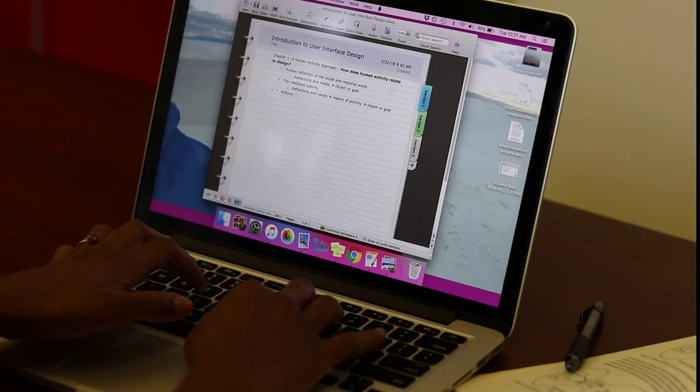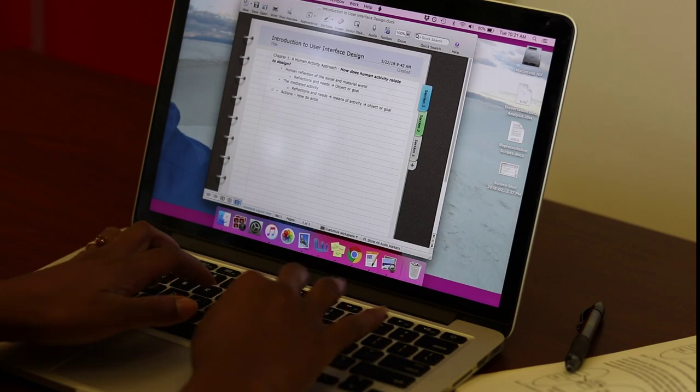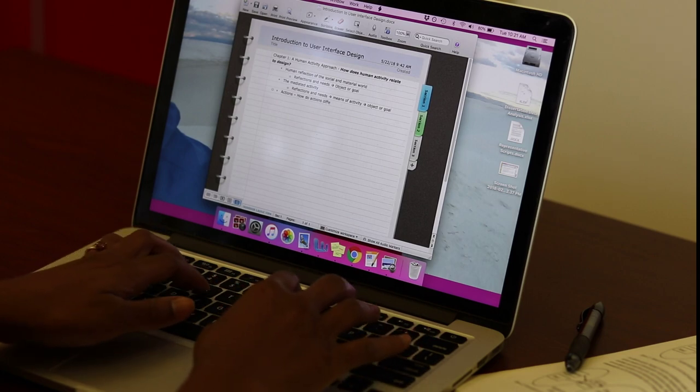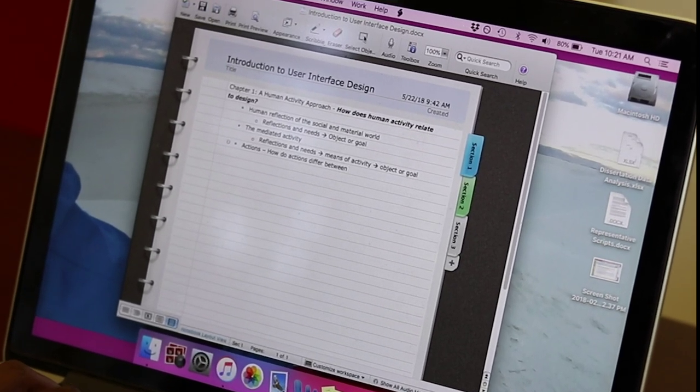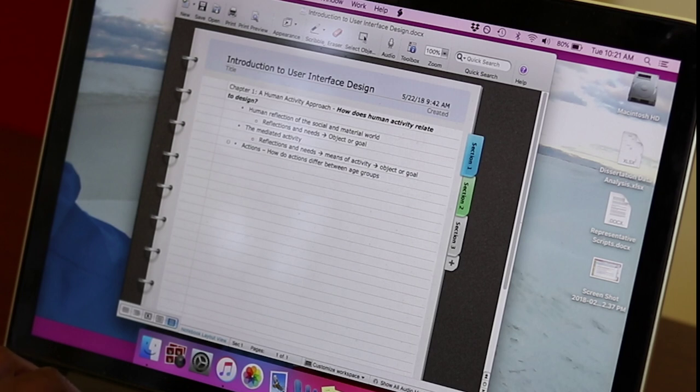A reading strategy I find valuable for this process is using key research questions to guide my reading. To accomplish this, I reframe section headings as research questions to ensure that I pull the most relevant information from whatever source I am reading.